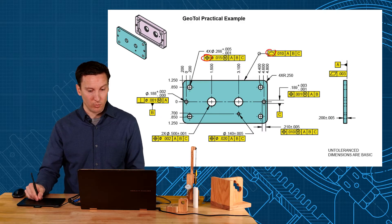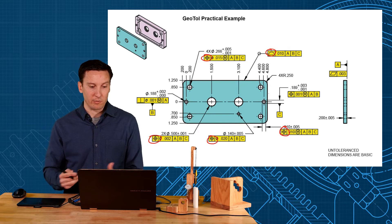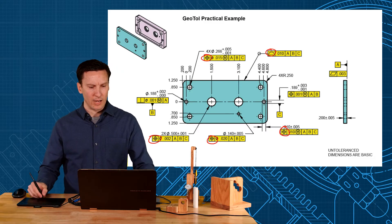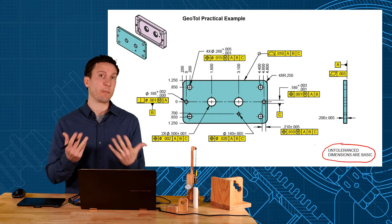Position, profile, position, position, position. I mean everything is position and profile. Locate everything to the datum reference frame. Now of course we're going to use all dimensions are basic here because we're using geometric tolerancing. And rather than putting boxes on all of them, the note I think was better here.